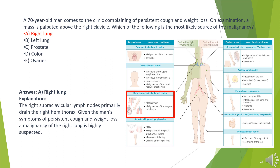The answer is A. Right lung. The right supraclavicular lymph nodes primarily drain the right hemithorax. Given the man's symptoms of persistent cough and weight loss, a malignancy of the right lung is highly suspected.